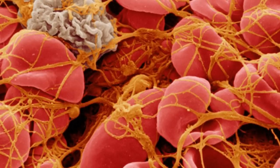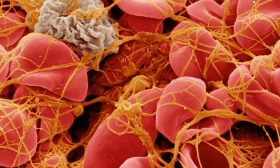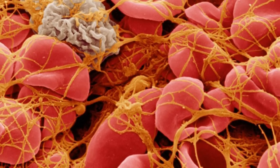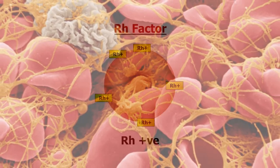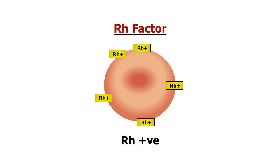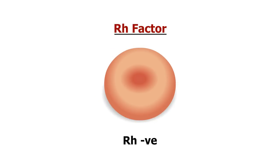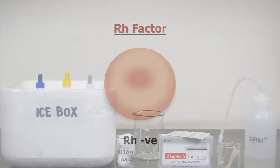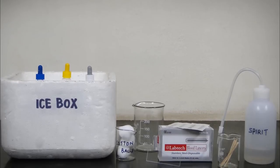The RH or Rhesus factor is found on the RBC surface in most people. Like A and B, this is also an antigen, and those who have this antigen are called RH positive. Those who lack this antigen on the surface of RBCs are called RH negative.